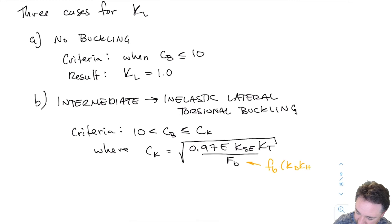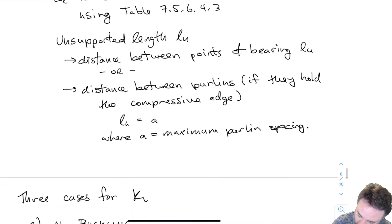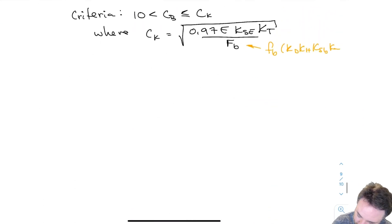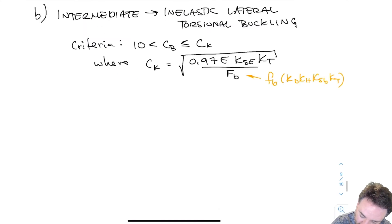This FB is capital FB, which is our small fb times KD times KH times KSB times KT, just like usual. If we fit into those bounds for CB, then KL equals this fairly simple equation: 1 minus one half times CB over CK to the fourth.